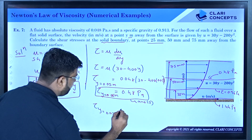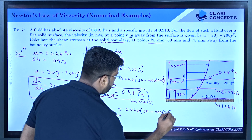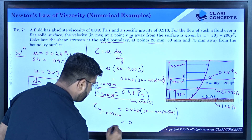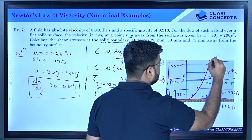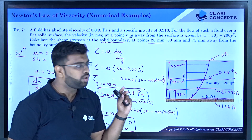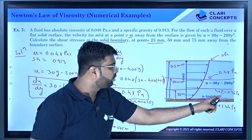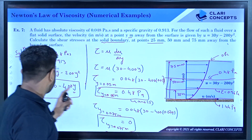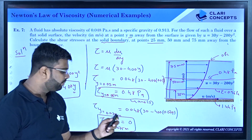Finally, tau at y equals 0.075 meters: 0.048 × (30 − 400 × 0.075) = 0.0 at that point. The meaning is that at 75 mm, the shear stress is zero. The key concept: when a non-linear profile is given, du/dy changes at different levels. In exams, always calculate du/dy first, plug it into the equation, and then substitute the y value in meters to find the answer.